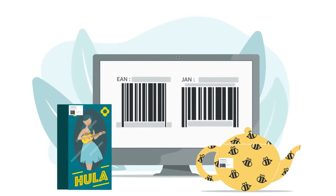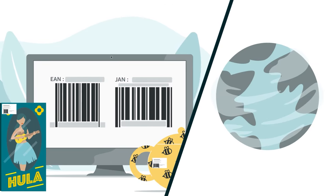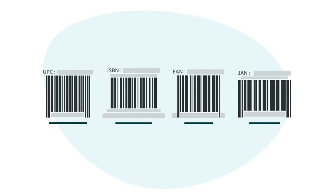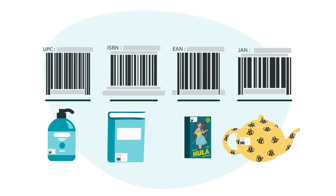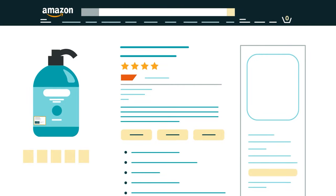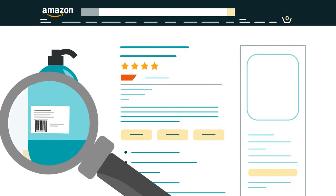EANs and JANs are also sometimes referred to as International Article Numbers. UPCs, ISBNs, EANs, and JANs vary in length, but each acts as a unique product identifier. Most product categories sold on Amazon require a specific GTIN type. In many cases, it will be UPC.